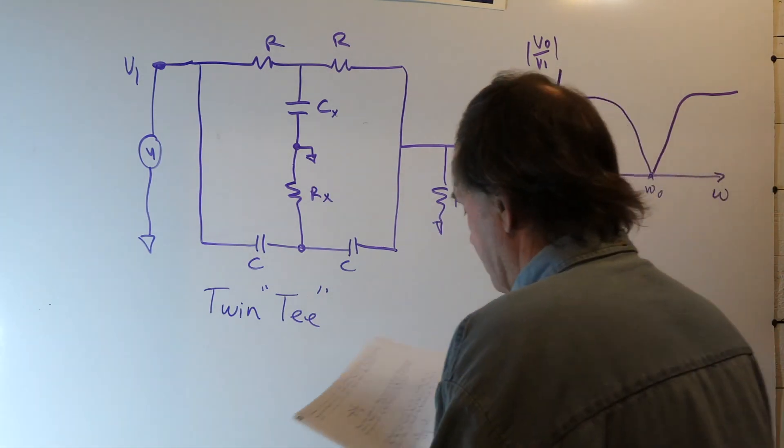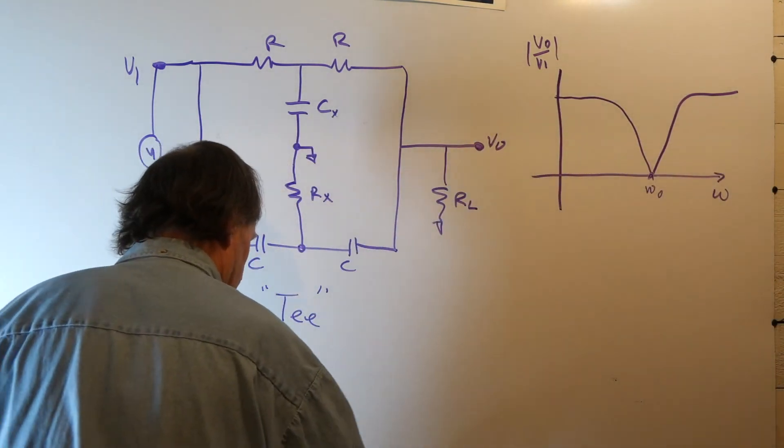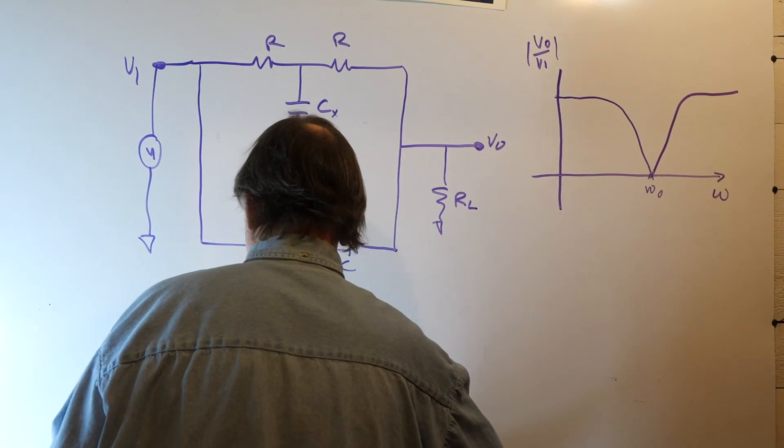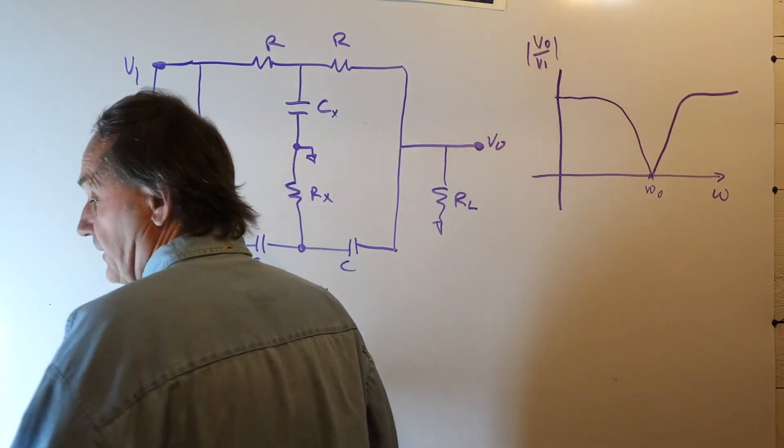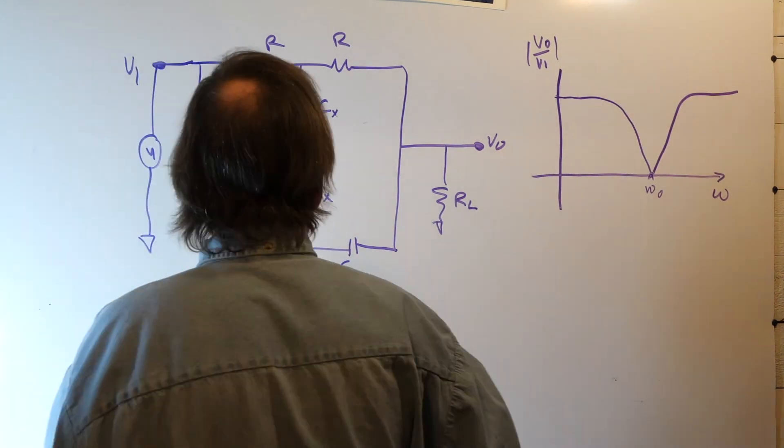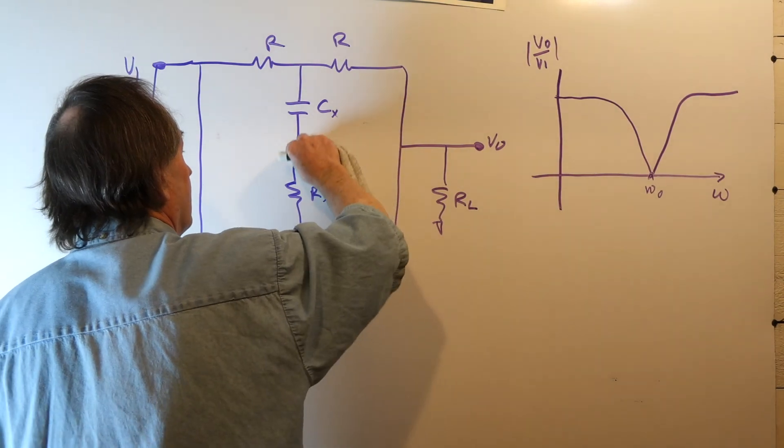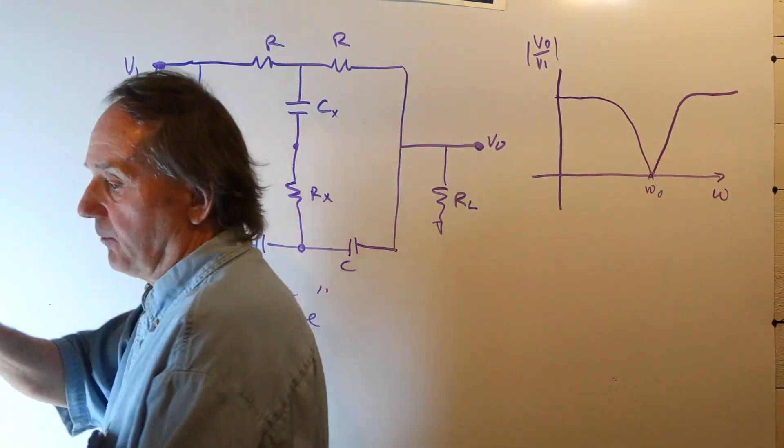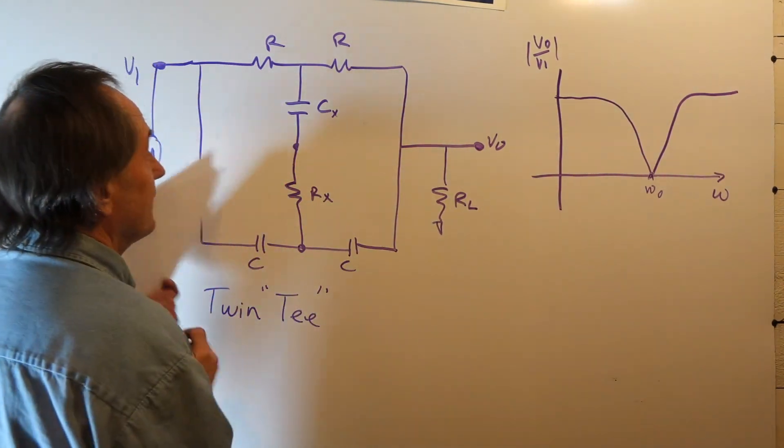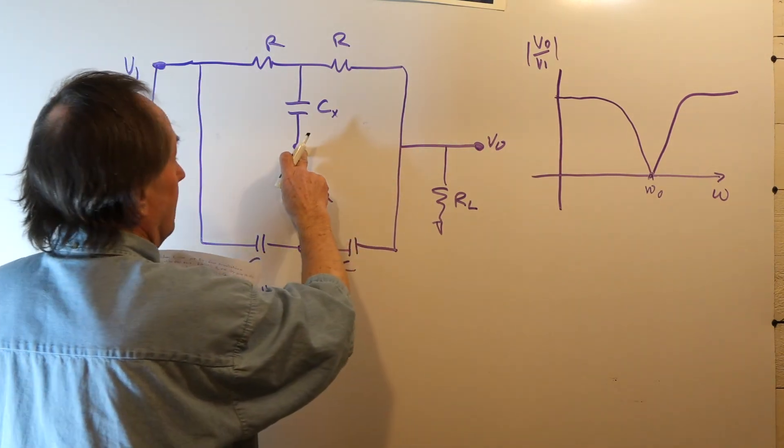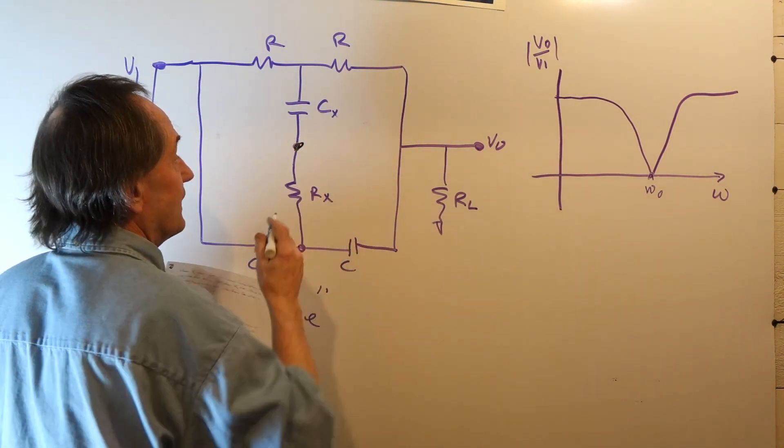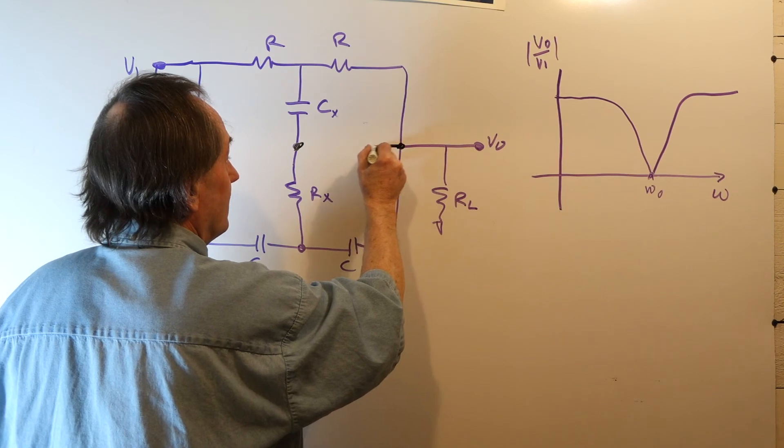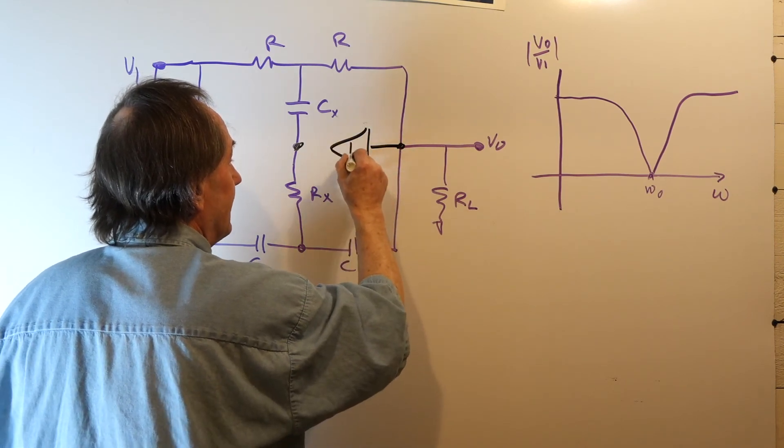Now, if I add an amplifier to this network to bootstrap up the output, or bootstrap this node from the output, what I'm going to do is I'm going to take an amplifier. I'm no longer tying this node to ground.